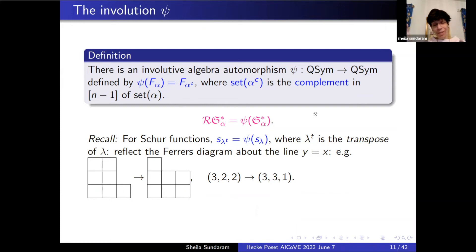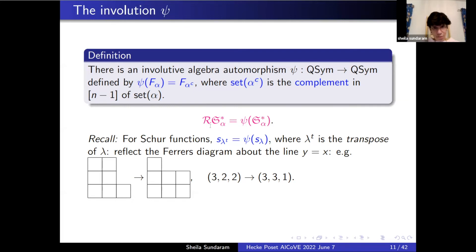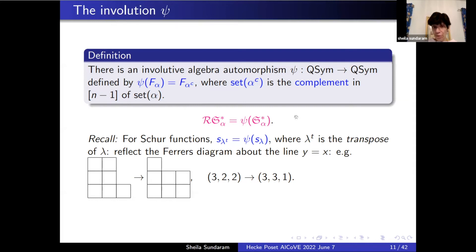These two bases are related by the involution psi on the ring of quasi-symmetric functions. Psi sends the fundamental quasi-symmetric function indexed by alpha to the fundamental indexed by alpha-complement, where you're complementing the sets associated to the compositions. It relates to the omega that Antonio Negro just talked about — in the ring of symmetric functions, psi is just the involution omega.